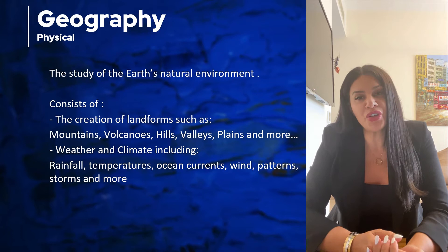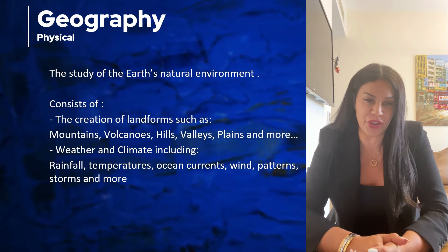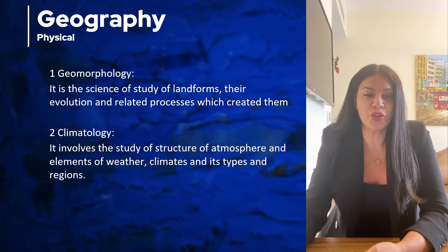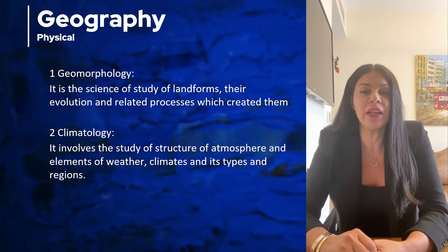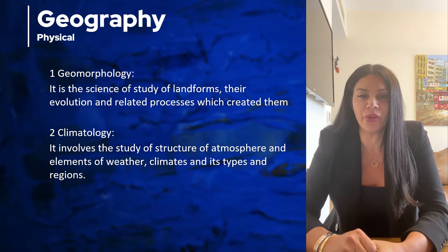There are sub-branches in physical geography, mainly four sub-branches. The first one is geomorphology. Geomorphology deals with the changing landforms — the actual landforms — like mountain, hills, plain, and plateau.